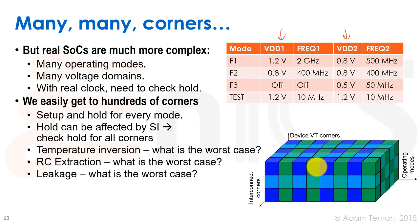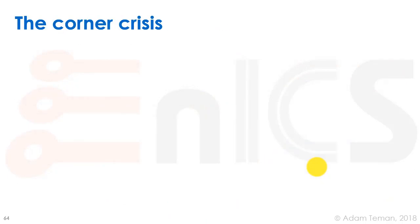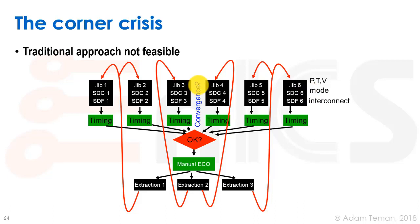Are we going to make a separate SDC for each corner and run optimization on each one? The traditional way — and many companies still do this today — involves running timing with tools like Tempest or PrimeTime, checking the results, making manual ECOs, re-extracting, and repeating. Since we can't realistically do this for millions of corners, we limit ourselves to maybe five or six corners, but iterating through extraction and ECOs back and forth takes enormous time and often doesn't converge. That's not feasible with hundreds of corners.